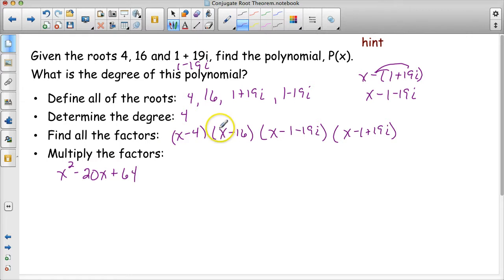x times x is x squared. x times negative 16 is negative 16x. Negative 4 times x is negative 4x. Those are like terms. So negative 16x plus negative 4x is negative 20x. And negative 4 times negative 16 is a positive 64. This is one of my factors of p of x, one of my trinomial factors.